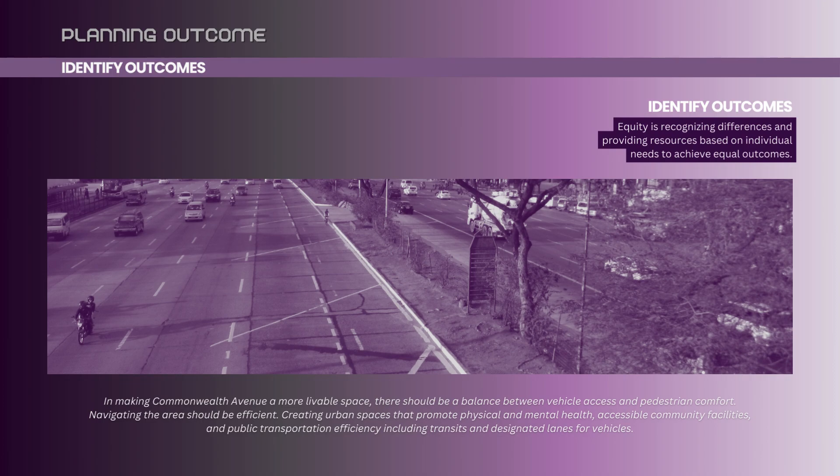We proceed to identifying the planning outcomes of our site. Social equity in urban design means recognizing differences and providing resources based on individual needs to achieve equal outcomes. In making Commonwealth Avenue a more livable space, there should be a balance between vehicular access and pedestrian comfort. Navigating the area should be efficient, creating urban spaces that promote physical and mental health, accessible community facilities, and public transportation efficiency, including transits and designated lanes for vehicles.